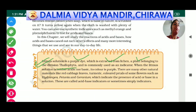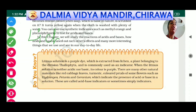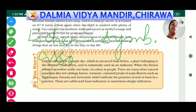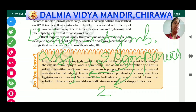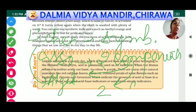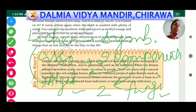Lichen is defined as a symbiotic association. A symbiotic association involves two components living with each other, working for each other — two partners that live together, function separately, but both are benefited from each other. In lichen, the two components are algae and fungi.